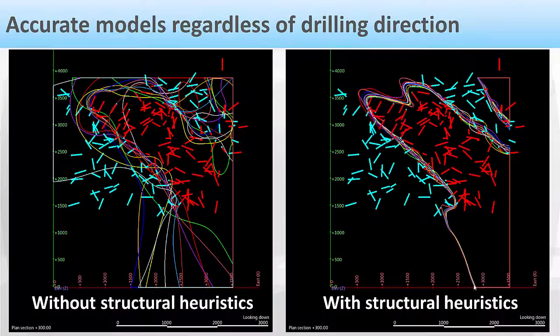This is a slice through the model showing the contact of A and B at depth. Without structural heuristics, on the left-hand side, the contact goes all over the place and is at the mercy of the sampling. Whereas with structural heuristics, on the right-hand side, the contact between A and B does not wander away too far. The power of incorporating structural knowledge into the deposit modelling is incredibly powerful.